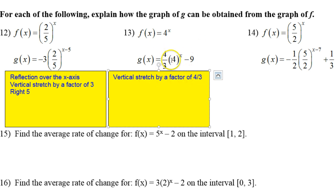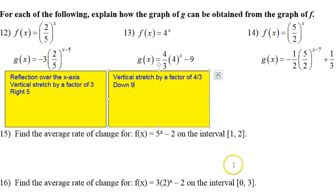Ignore the 4, that's just part of the parent function. But the minus 9 has the effect of shifting the graph down 9. That's all that's going on there.